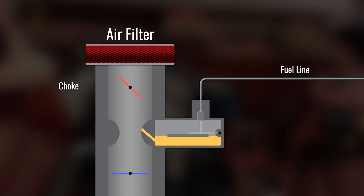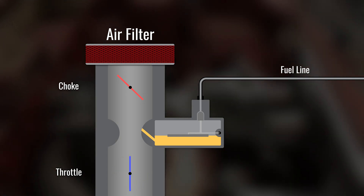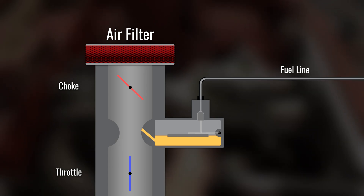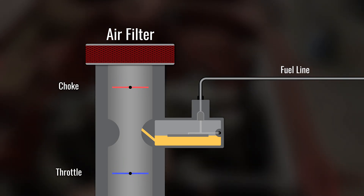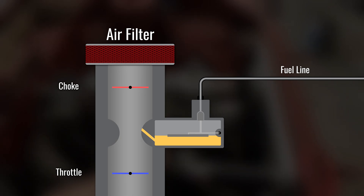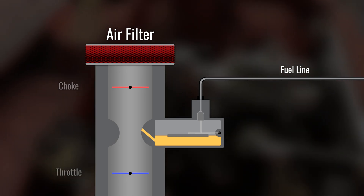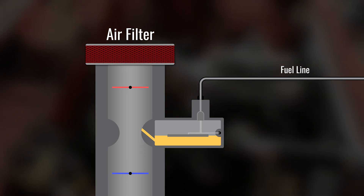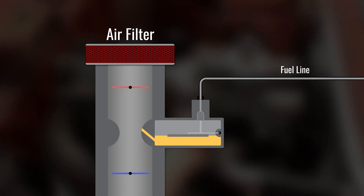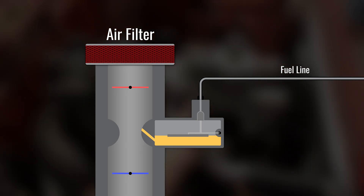Beneath the venturi, there's a second valve called the throttle. The more the throttle is open, the more air flows through the carburetor and the more fuel it sucks from the chamber. With more fuel and air flowing in, the engine is able to combust more air and fuel molecules, releasing more energy and thus creating more power. That's why opening the throttle makes a car accelerate — it's the equivalent of blowing on a campfire to supply more oxygen and make it burn more quickly.